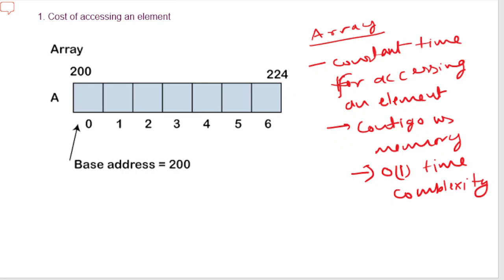In a linked list, elements are not stored in a contiguous manner. It consists of multiple blocks where each block is a node with two fields — one for data and one for storing the address of the next node. To find any node we first need to find the head node. To find the second node we traverse from the first, and in the worst case to find the last node we traverse all nodes. The average case time complexity for accessing an element is O(n).